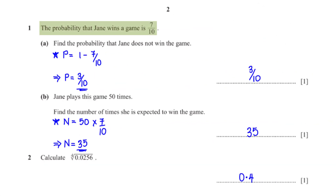The probability that Jane wins a game is 7 over 10. Find the probability that Jane does not win the game. The probability that Jane wins plus the probability that she does not win must add up to 1, so we subtract 7 over 10 from 1, giving us 3 over 10.